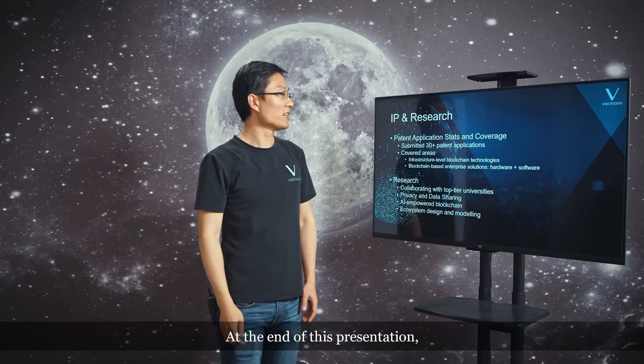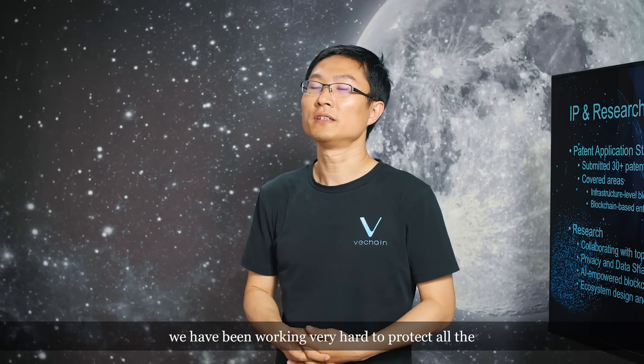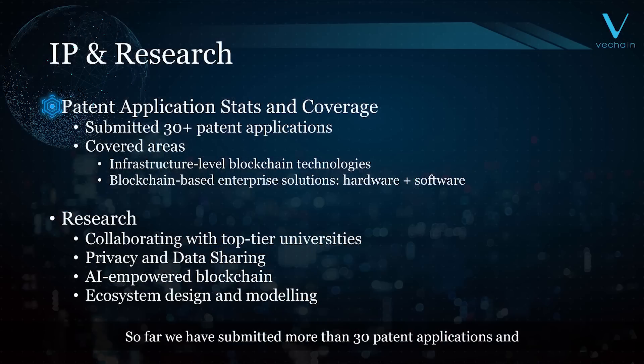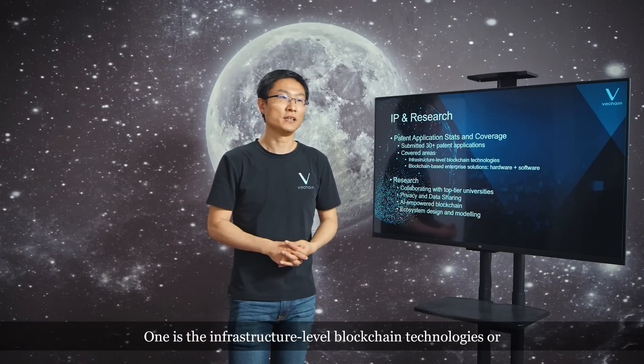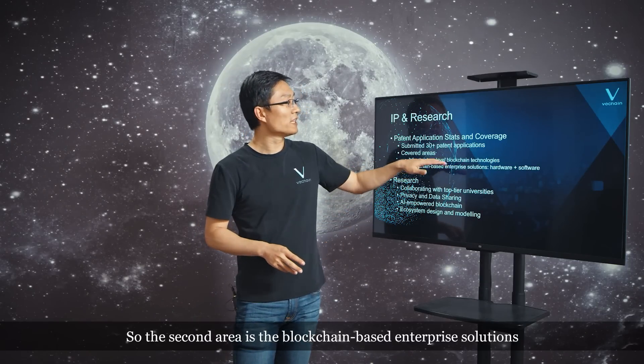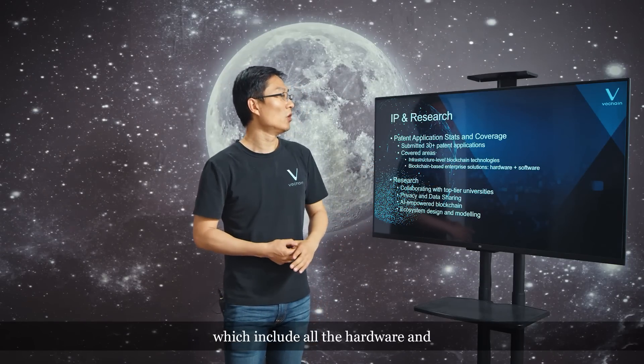At the end of this presentation, I'm going to talk about IP and research. Inside the VeChain team, we have been working very hard to protect all the innovations we've created. So far, we have submitted more than 30 applications to protect our ideas and technologies. These cover two major areas: infrastructure-level blockchain technologies — all the core features of our VeChain Thor platform — and blockchain-based enterprise solutions, which includes all the hardware and software we have been developing.